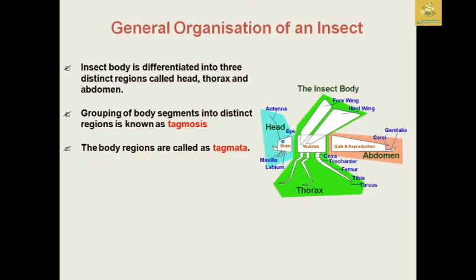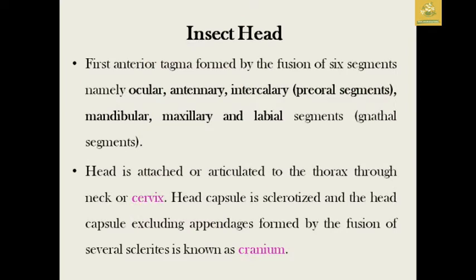While seeing the general organization of the insect, it is divided into three distinct regions: the head, thorax, and abdomen. The process of grouping body segments into distinct regions is known as tagmosis, and the body regions which are formed by tagmosis are known as tagmata. You must need to remember these terms.